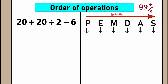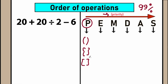What does PEMDAS mean? Each letter stands for something — it's like a quick checklist. The letter P stands for parentheses. Parentheses have the highest priority. Let's scan our question for any parentheses or brackets. I don't see any parentheses, so we can easily skip this part — we don't have any parentheses.